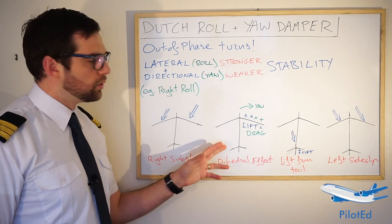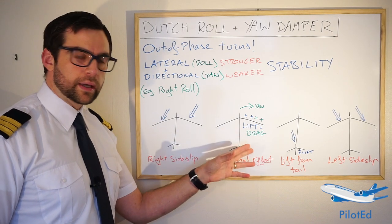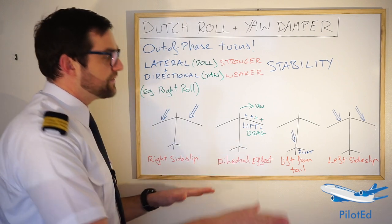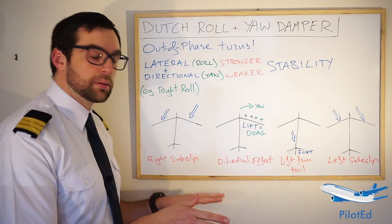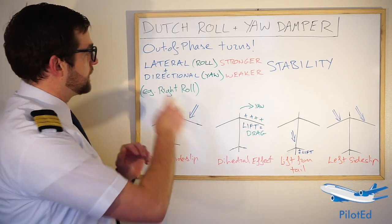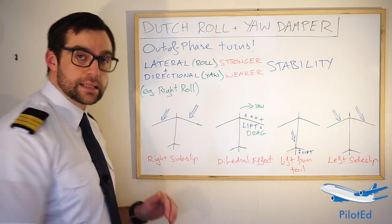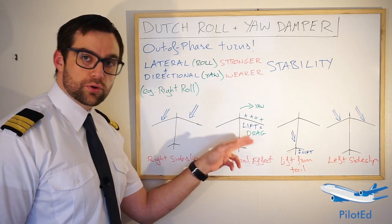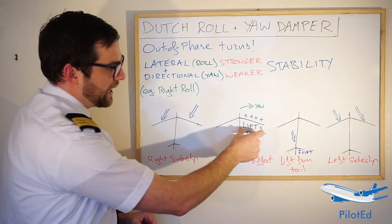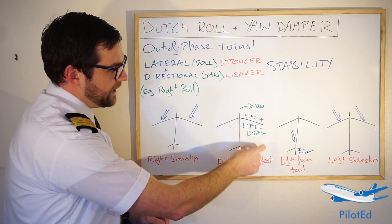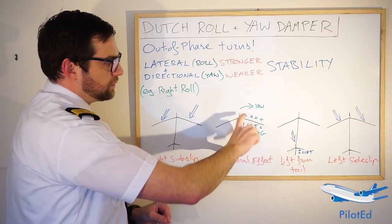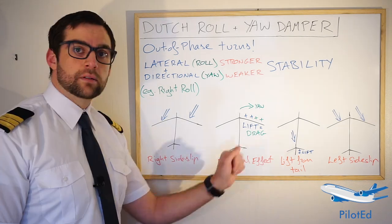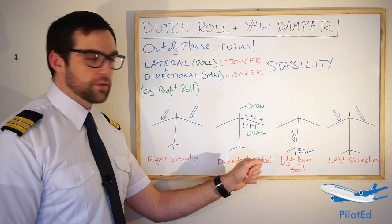If we have more lift on the right wing, this is going to cause that dihedral effect — it's going to want to lift that right wing up and roll wings level again. That comes from the positive lateral stability. More lift also equals more drag, and if we have more drag on that part of the aircraft it's going to yaw, or pull, the nose to the right.